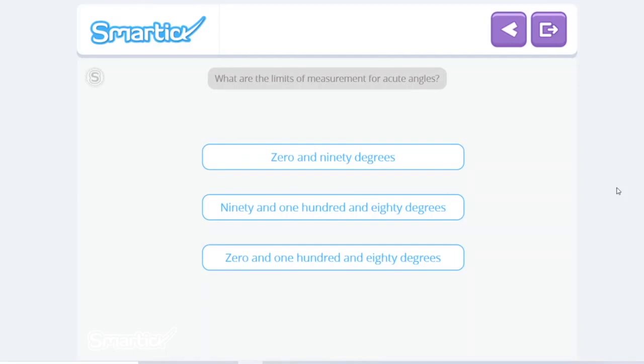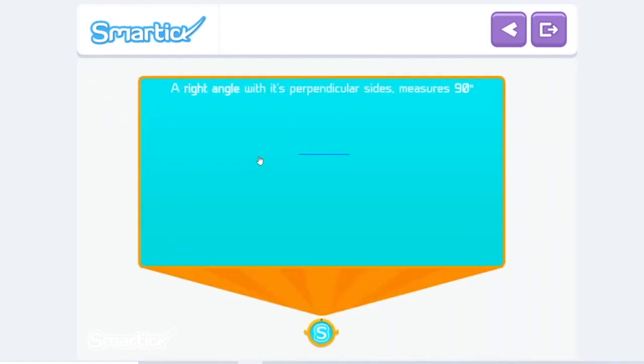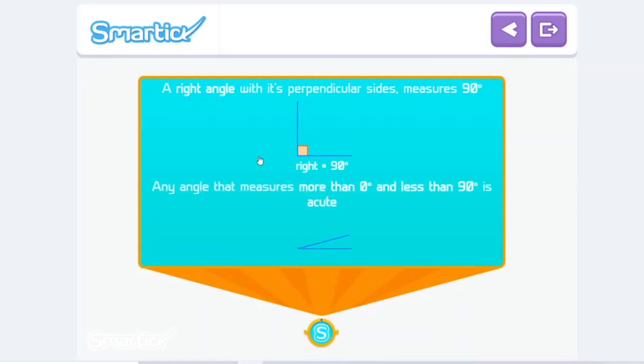So for an acute angle, it's between 0 and 90 degrees. A right angle with its perpendicular sides measures 90 degrees. Any angle that measures more than 0 and less than 90 degrees is acute.